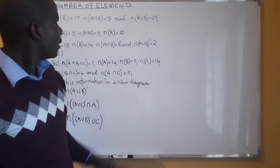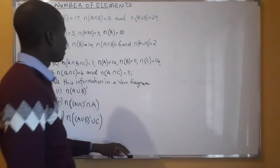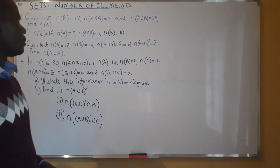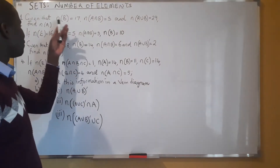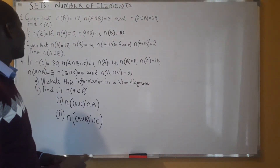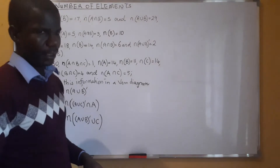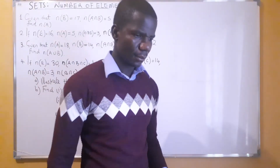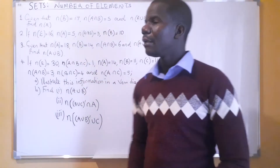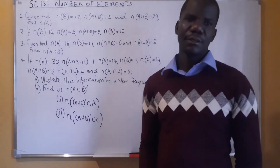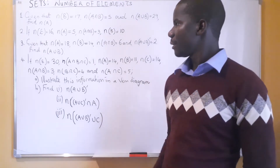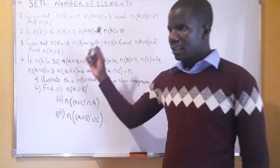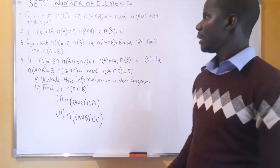So we are looking at sets, and under sets we are going to look at the number of elements — when we are given the number of elements in some set, and also how do we find the number of elements in that particular set. Everything is given in the form of number of elements. So here we have four examples. It's easier to use a Venn diagram here even when they have not requested it.